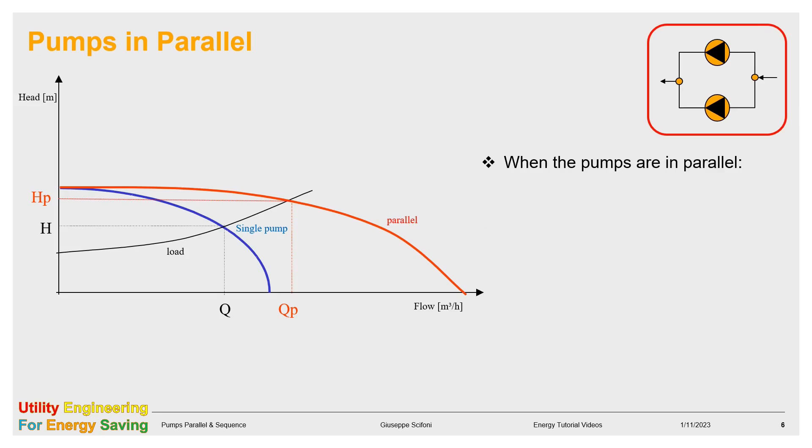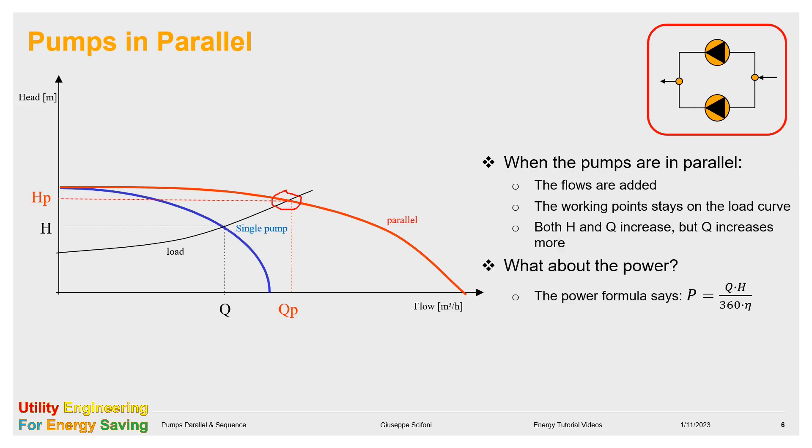Now we see how the parallel operation looks like. The flows are added. The working point is kept on the load curve, and moves into the right to match the new system curve, the right one. If the pumps are correctly chosen, Q increases more than H. The power is given by the same formula for the single pump, by using the new operation point HP and QP. Same as seen for the sequence, generally the power of the parallel is less than the sum of the powers of the single pumps.